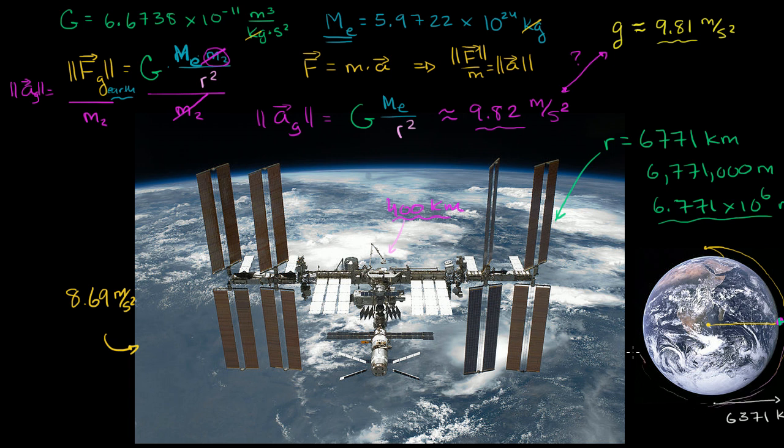So we know from our studies of circular motion so far, what's keeping it going in circular motion, assuming that it has a constant speed, is some type of centripetal acceleration. And that centripetal acceleration is the acceleration due to gravity. And we figured out what it was at 400 kilometers.